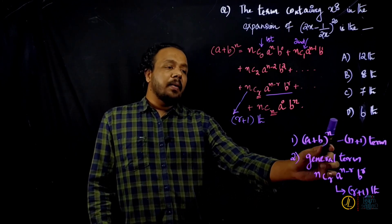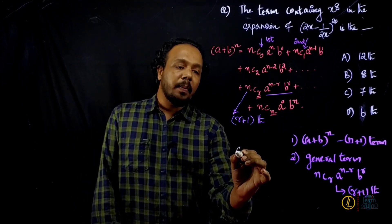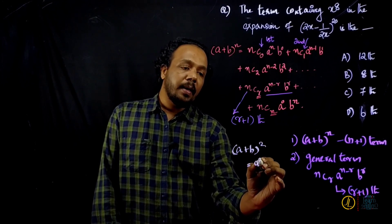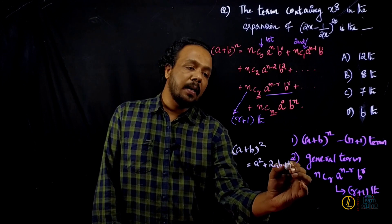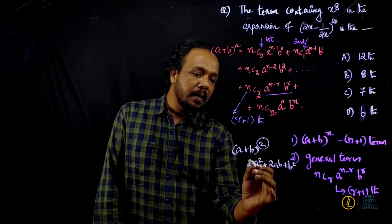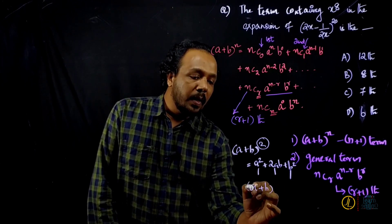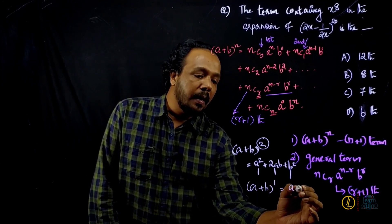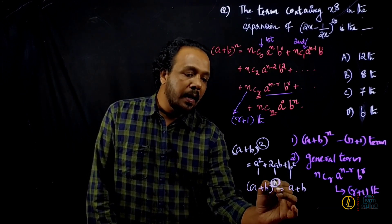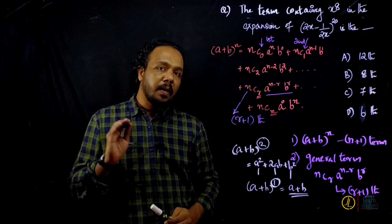For (a + b) raised to n, there are n+1 terms in total. For example, (a + b) raised to 1 gives a + b, which has 2 terms — that is, n+1 terms. We will use the general term, which corresponds to r and r+1.